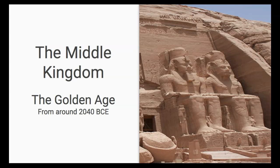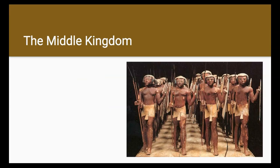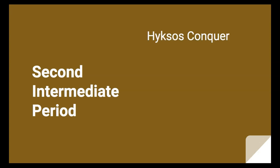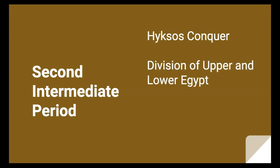The Middle Kingdom was known as the Golden Age, mainly because Egypt was reunited. There were new trade routes leading to prosperity, and the pharaohs of the time actually cared about the welfare and interests of their people. They built strong armies and expanded into neighboring territories, including Palestine, Syria, and Nubia. But the Middle Kingdom also came to an end with the Second Intermediate Period, during which Lower Egypt was conquered by the Hyksos.